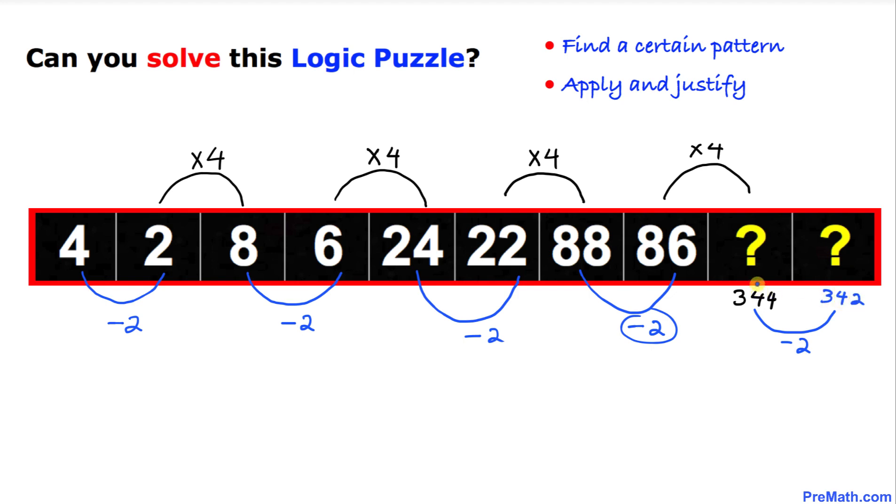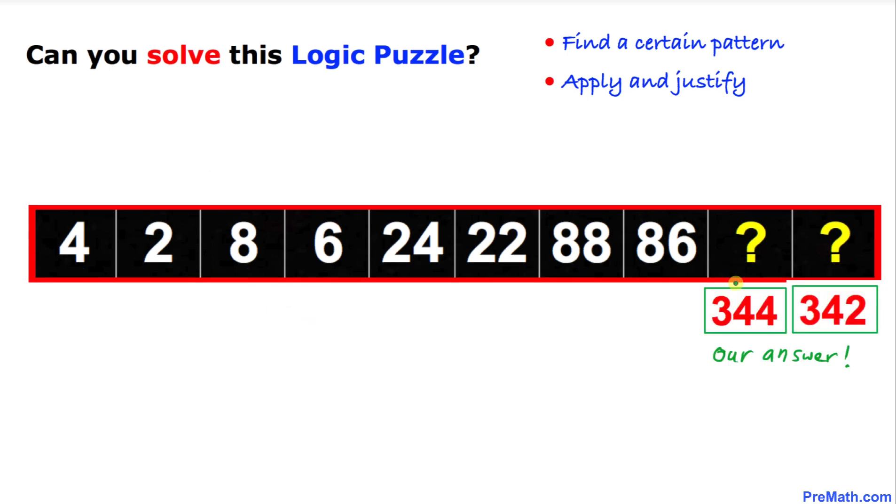That means 344 minus 2 is going to give us 342. So our desired numbers are 344 and 342. Thus our answer turns out to be 344 and 342.